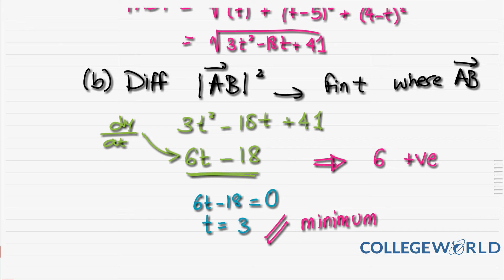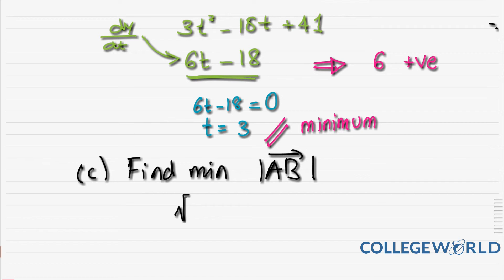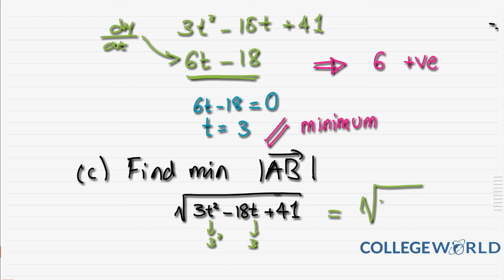Part c asks us to find the minimum value of |AB|. We only found the t that gives us the minimum. The magnitude of AB is √(3t² - 18t + 41). To find the minimum, we replace t by 3. That gives us √(3(3²) - 18(3) + 41) = √(27 - 54 + 41) = √14.